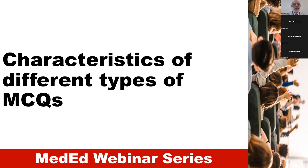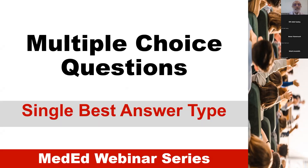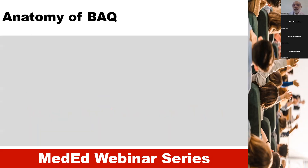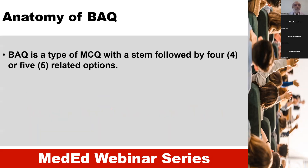Now, let's talk about the characteristics of different types of multiple choice questions. First, we will talk about single best answer type, or BAQ. The BAQ, or best answer question, is a type of multiple choice question with a stem, which is followed by four or five related options.